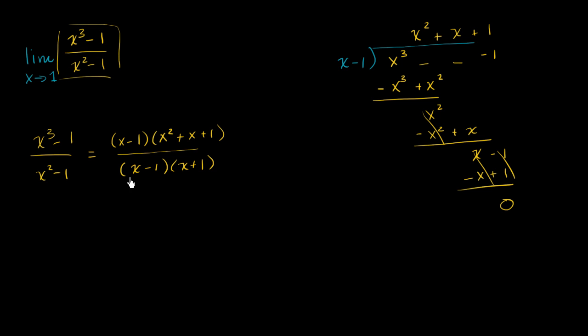And so we can say that this is the same exact thing. We can have these cancel out if we assume x does not equal 1. So that is equal to x squared plus x plus 1 over x plus 1 for x does not equal 1.